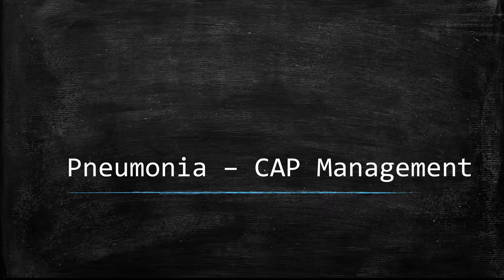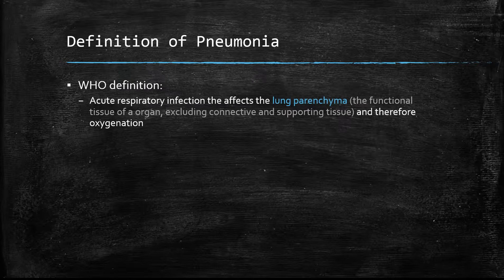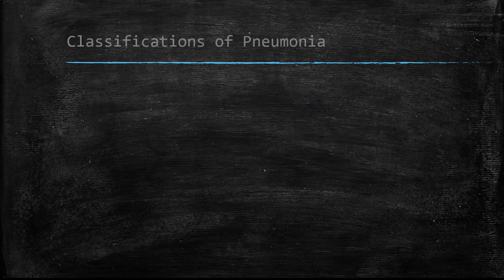Today's lecture will be about pneumonia and in this lecture we will be talking about the management of community acquired pneumonia. The management of hospital acquired pneumonia will be talked about in a separate lecture. WHO defines pneumonia as an acute respiratory infection affecting the parenchyma of the lung, and because of this it affects oxygenation.